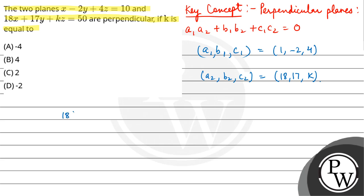So 18 times 1 plus 17 times minus 2 plus 4k equals 0. 18 minus 34 plus 4k equals 0. 4k equals 16, k equals 4.